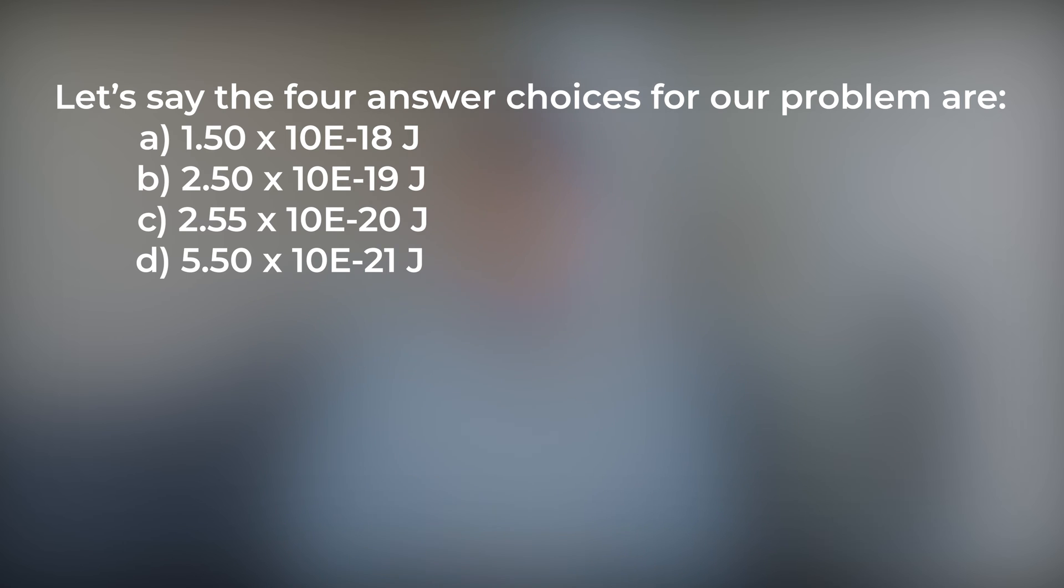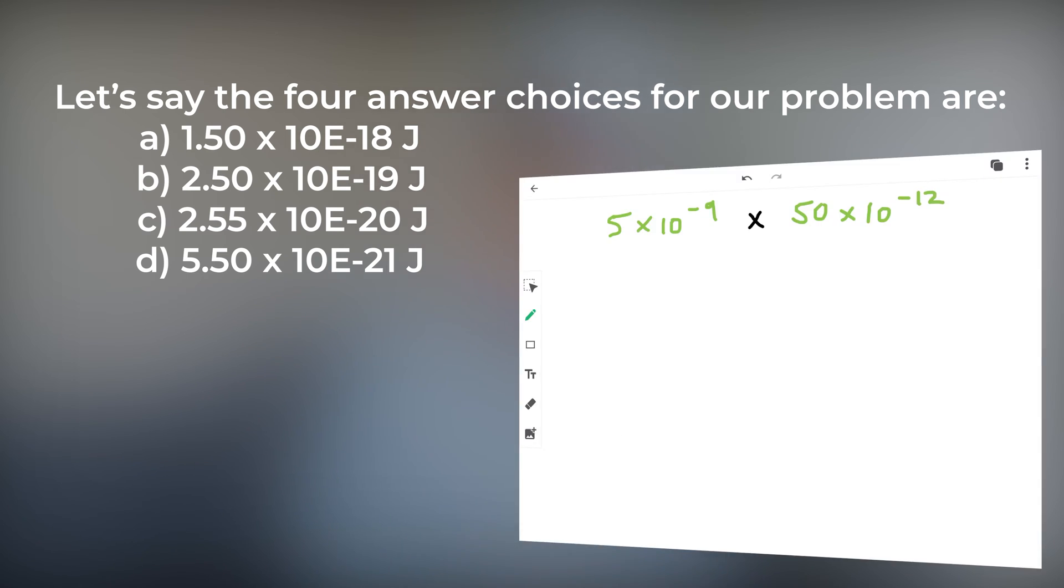At first glance, those answer choices look tricky because they are very similar, but let's take an even closer look. Let's say we simplified our math by removing the scientific notation. So, we go from 5 times 10 to the negative 9th, times 50 times 10 to the negative 12th, to 5 times 50. That's easier, right? We know the answer is 250.